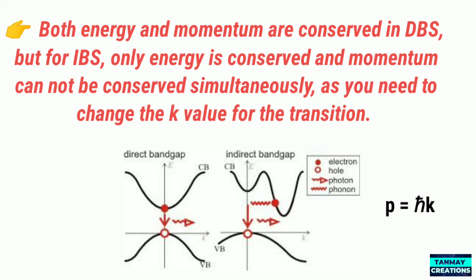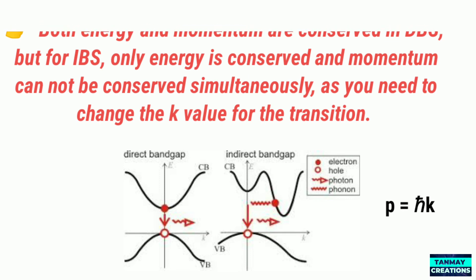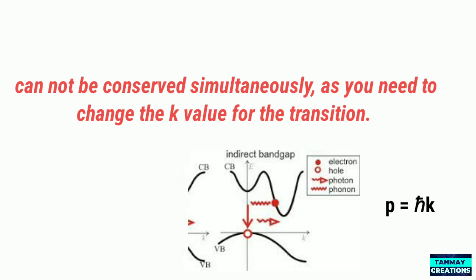In a direct band gap semiconductor, direct recombination takes place with the release of energy equal to the energy difference between the recombining particles. In an indirect band gap semiconductor, due to the relative difference in momentum, first the momentum is conserved by the release of energy, and only after both momenta align themselves does recombination occur, accompanied by the release of energy.